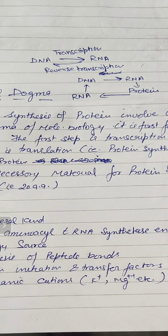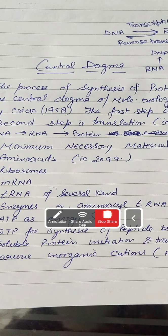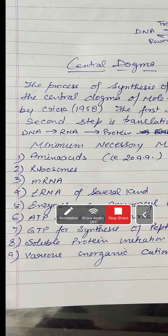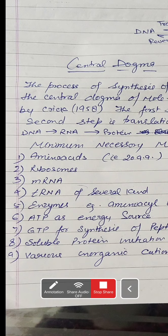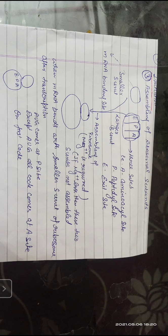This whole process is called the central dogma. Now, protein synthesis requires some necessary materials. First of all, amino acids — twenty amino acids. Ribosomes are also required. In the case of ribosomes, the smaller subunit contains the mRNA binding site.